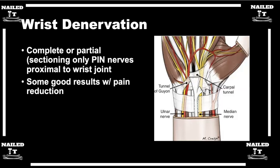When injecting for the AIN/PIN trial, it can be done in clinic. I like to use just two percent lidocaine, though you can use marcaine to make it last a little longer. You can do it freehand or under ultrasound — you'll often feel when you go through the interosseous space into the anterior compartment.